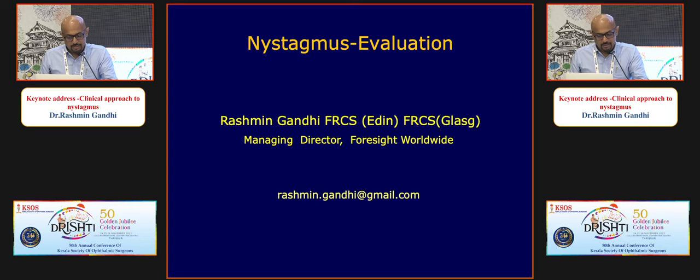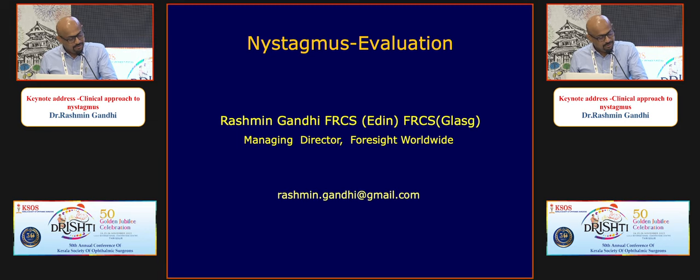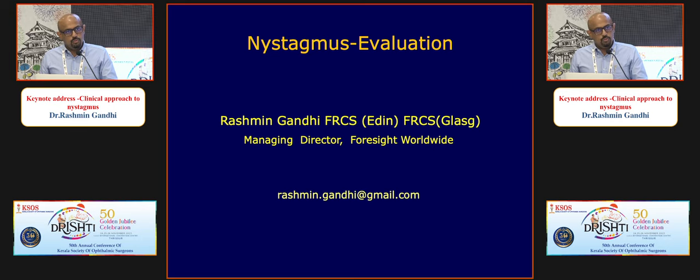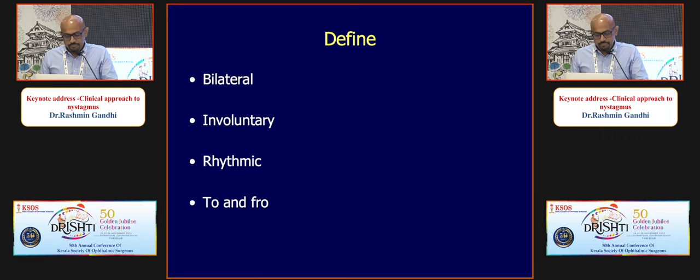Thank you, KSOS. When you see a patient with nystagmus, there are effective steps to deploy in the OPD to distinguish neurological from non-neurological nystagmus. First, ask: is nystagmus present in primary gaze or absent? Second, characterize the movement: is it horizontal, vertical, torsional, or mixed? Third, determine whether there is a fast phase — jerk nystagmus — or no fast phase — pendular nystagmus. Fourth, see what happens to the nystagmus when the patient looks right, left, up, and down.